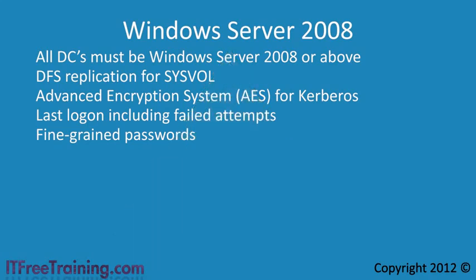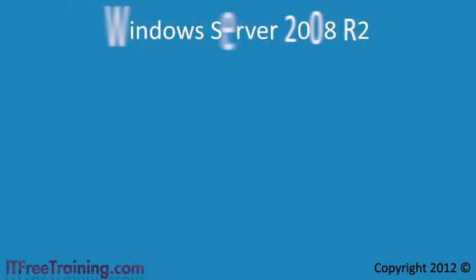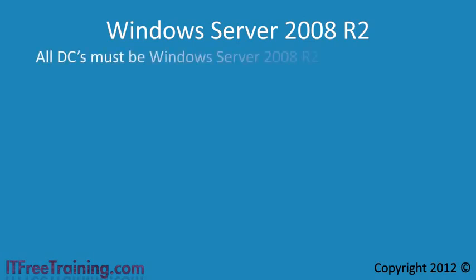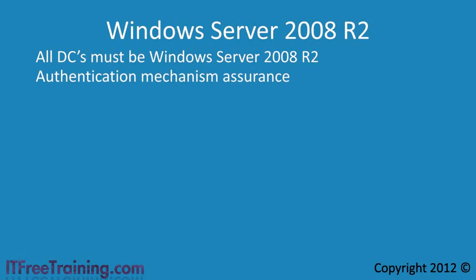The last domain functional level is Windows Server 2008 R2. In order to raise your domain to this functional level, all domain controllers must be running Windows Server 2008 R2. You gain two features. The first is authentication mechanism assurance, which allows compatible services to look at a Kerberos ticket and determine what was used to authenticate the user — for example, you may only want people to access a secure document if they authenticated using smart cards.